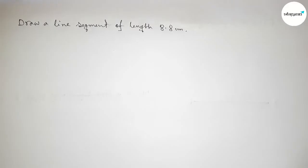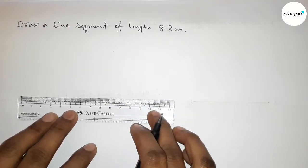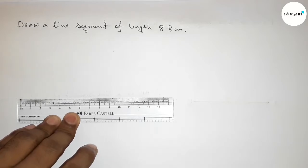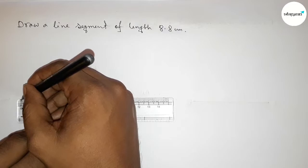Let's start the video. First of all, with the help of the scale we have to measure. First, putting the scale here perfectly, then measure the length 8.8 centimeters. So first counting here, this is the starting zero.